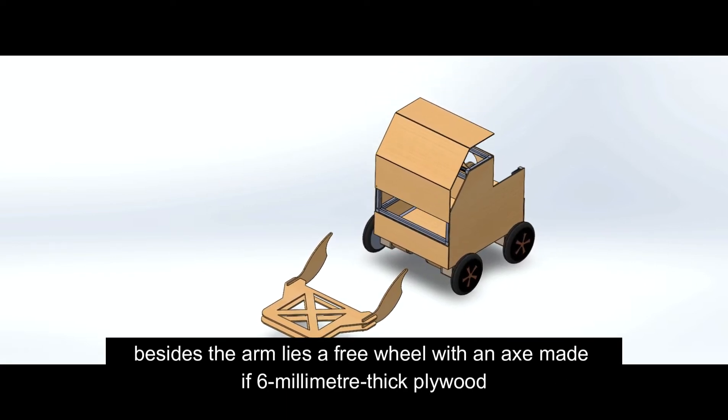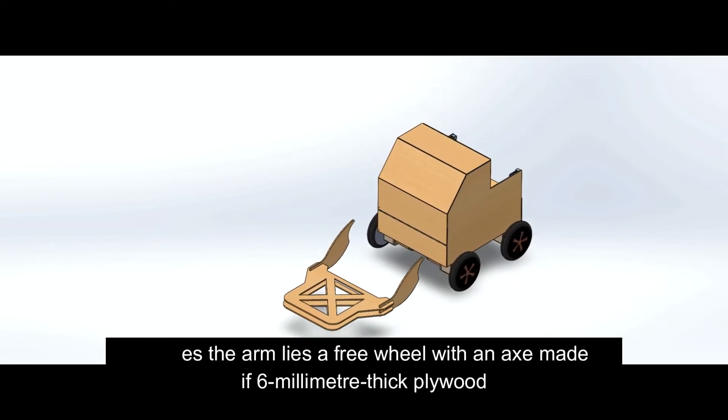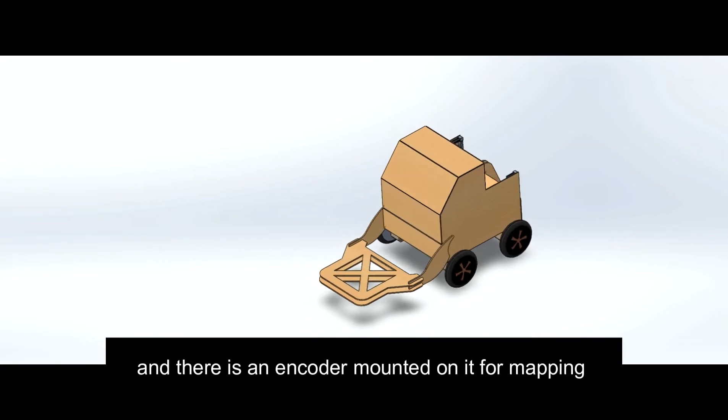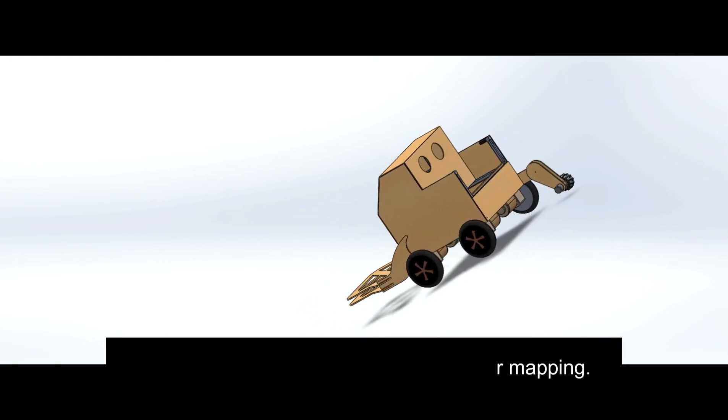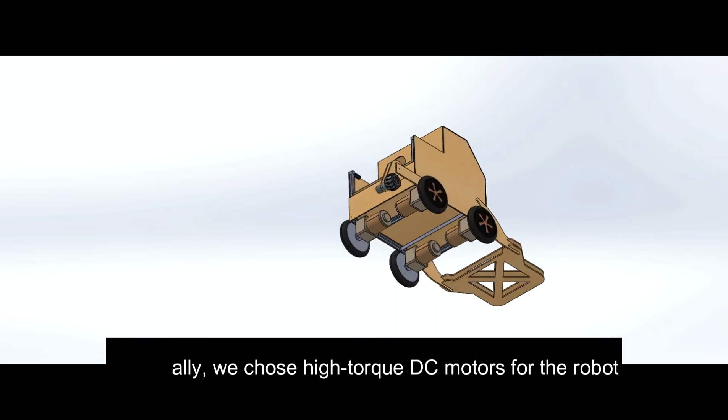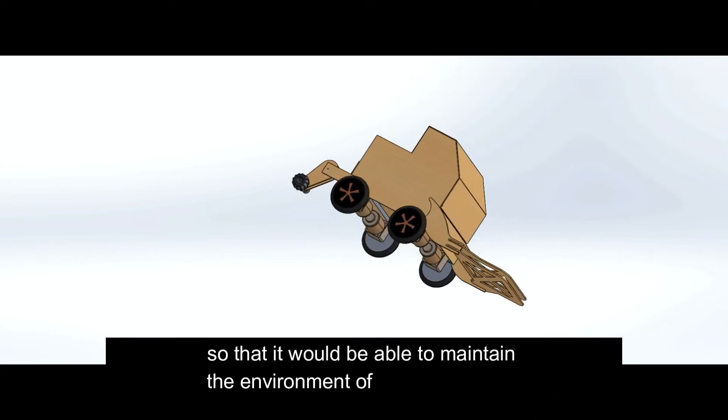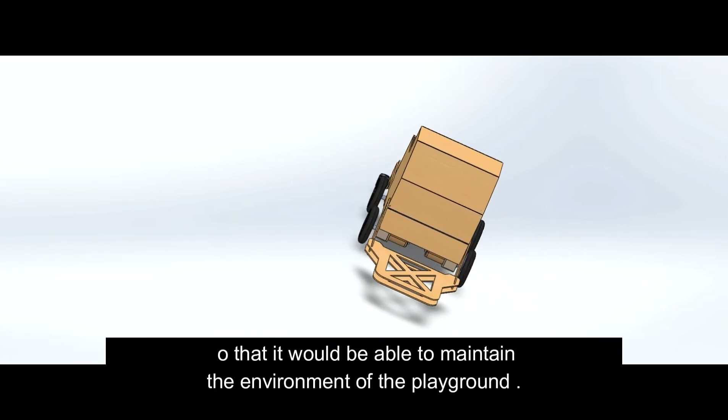Besides the arm lies a freewheel with an axle made of 6mm thick plywood, and there is an encoder mounted on it for mapping. Eventually, we chose high torque DC motors for the robot so that it would be able to maintain the environment of the playground.